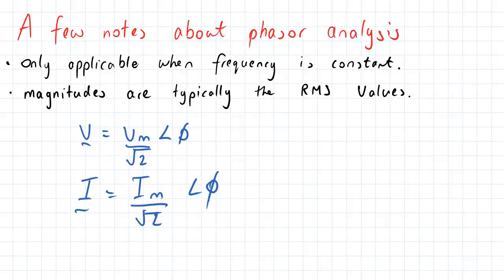So now, a few notes about our phasor analysis that we need to establish. First of all, a phasor analysis is only applicable when the frequency is constant. And second of all, the magnitudes that are used typically in our practical purposes are commonly the RMS values, or the root mean square values.